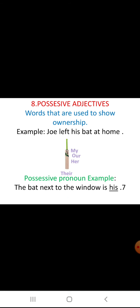Next is possessive adjectives. Possessive adjectives are words used to show ownership. For example, Joe left his bat at home. His is a possessive adjective — it tells whose bat it is; the owner is Joe. We can use my, our, her, their — these are all possessive adjectives.